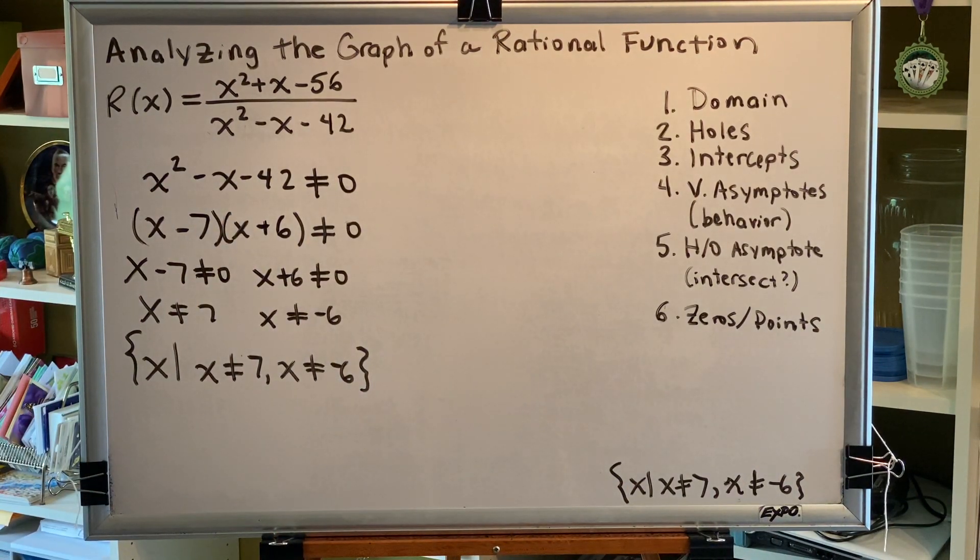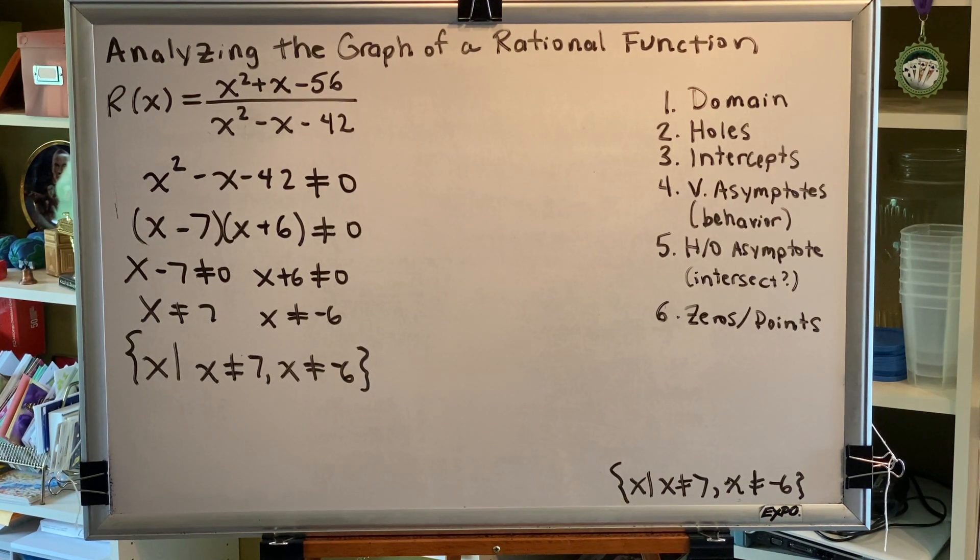Moving on. Step two, finding holes. So to find holes we're going to factor the numerator of r, then write r rational expression in lowest terms. Any cancelled factors will create a hole on the graph. We will set each cancelled factor equal to 0 and solve.